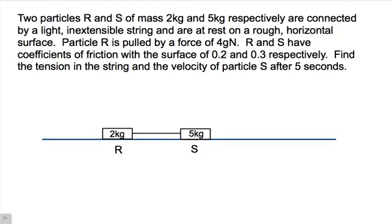Okay, so now looking at two particles R and S, but this time we have friction involved, so we need to work out what the friction is on these two particles. They're still connected by a light and inextensible string on a rough surface. We know particle R is pulled by a force of 4G Newtons, so I can put that in there. There's a force pulling left of 4G Newtons, so that force is pulling R left and then pulling S with it through the string.